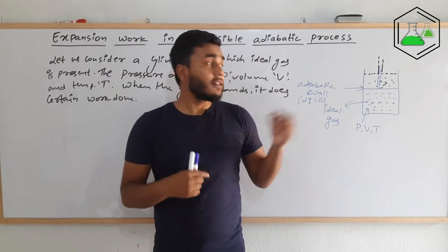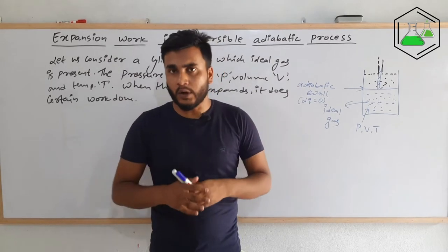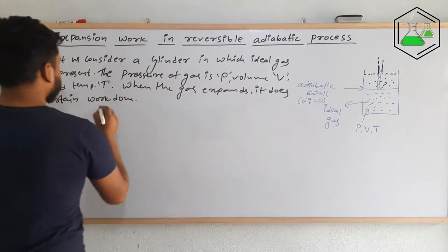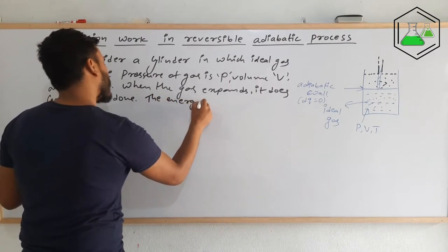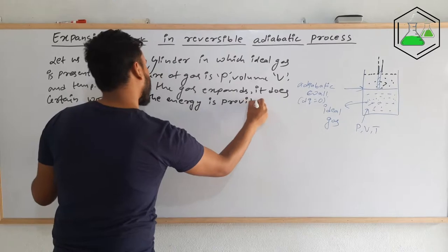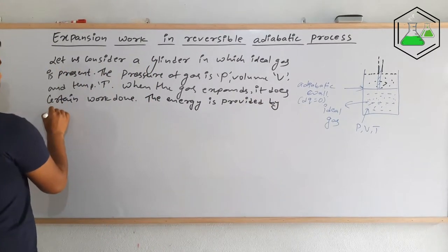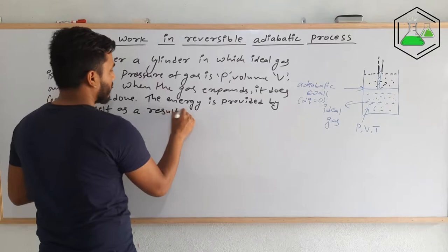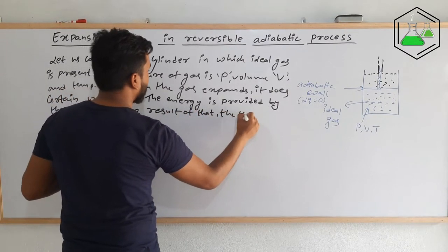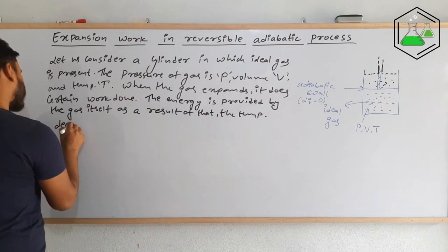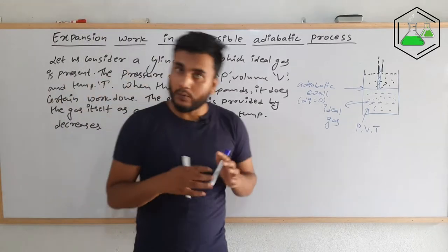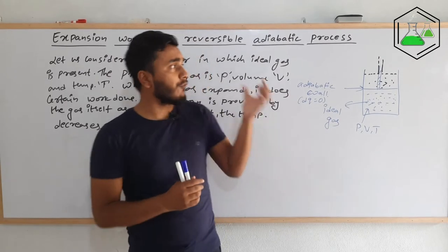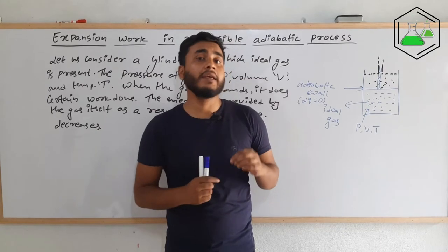That internal energy will provide the heat energy to do the expansion work. And when it provides the internal energy, its temperature will decrease. The energy is provided by the gas itself; as a result, the temperature decreases. The temperature of the ideal gas decreases. We are trying to find out the value of work done in terms of the initial and final temperature, because we can easily obtain those values.